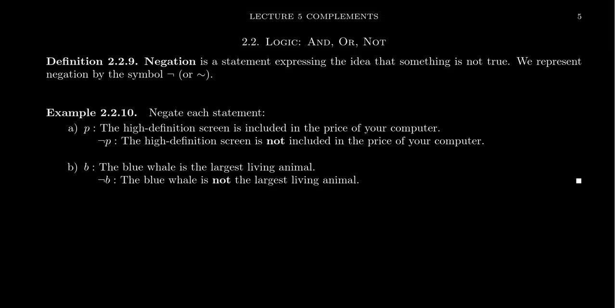In the previous video, we talked about set complements and how it represents 'not.' We want to do now the Boolean logic equivalent of that, and that's the idea of a negation. A negation is a statement expressing the idea that something is not true. We often represent this with a square bracket symbol, or some people use a little tilde — that's okay as well.